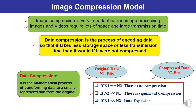If N1 is equal to N2, meaning the number of bits in the original data is the same as in the compressed data, it means there is no compression. And if N2 is higher than N1, meaning the number of bits has increased, this is the case of data explosion. You need not study this case here because we are concerned with image compression, which means N2 must be less than N1.